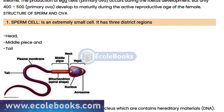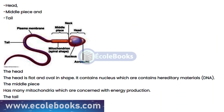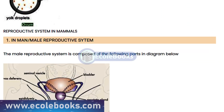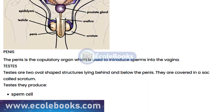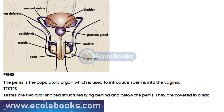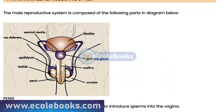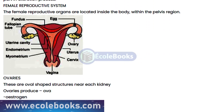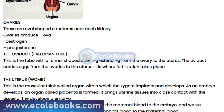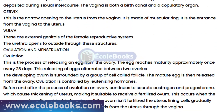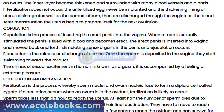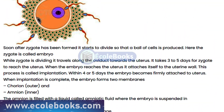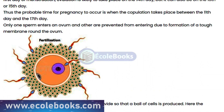In humans, the process of reproduction starts with the release of gametes from the gonads. The male gametes are sperm and are produced in the testes. The female gametes are eggs and are produced in the ovaries. The sperm travels to the egg and fertilizes it in the fallopian tube, resulting in the formation of a zygote, which then grows into an embryo.